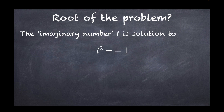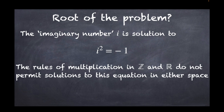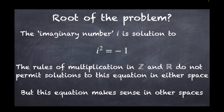The imaginary unit is called i, and it is the solution to the equation i² = −1. If you look at the rules of multiplication and squaring in the integers or in the reals, you'll find there is no solution to that equation in those spaces. Of course, in mathematics based on real numbers, there are plenty of other spaces where perhaps this equation makes sense and has a solution — and that's what we are going to look at.